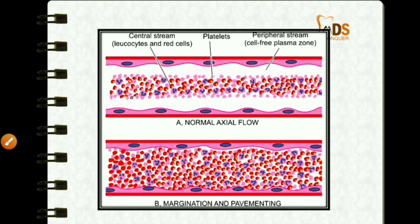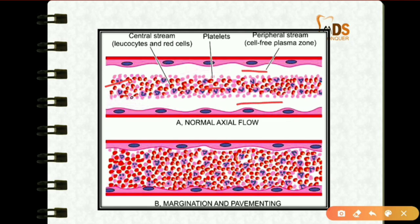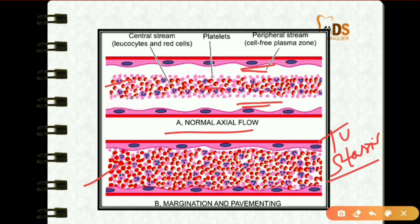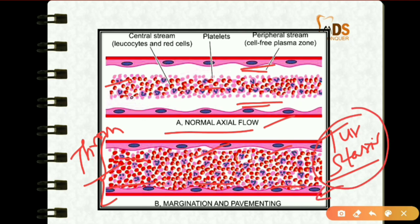In normal blood flow, the central stream consists of leukocytes and red cells, while the peripheral stream is a cell-free plasma zone. When there is turbulence or stasis, leukocytes, red cells, and platelets start marginating and pavementing to the periphery, which leads to thrombus formation.